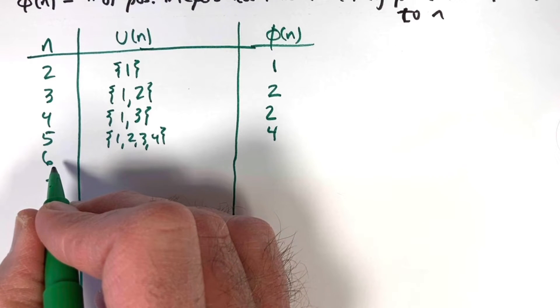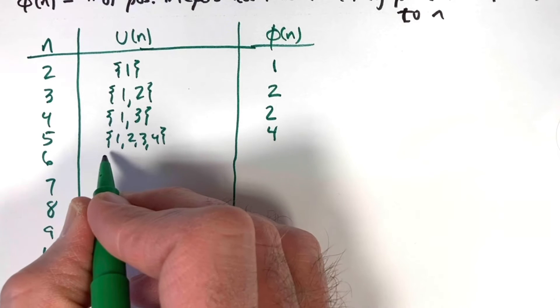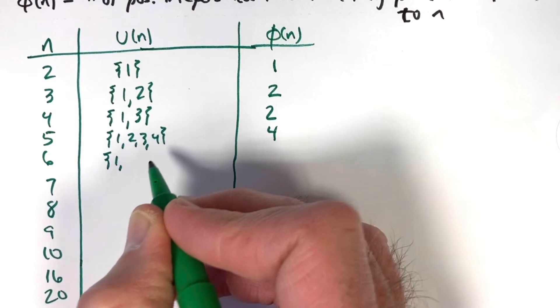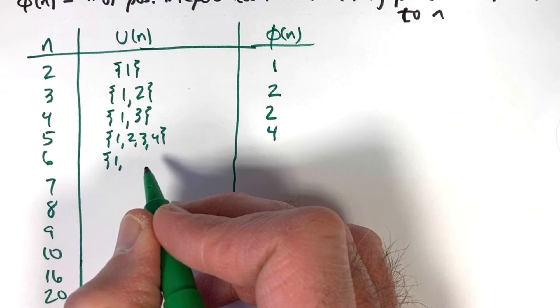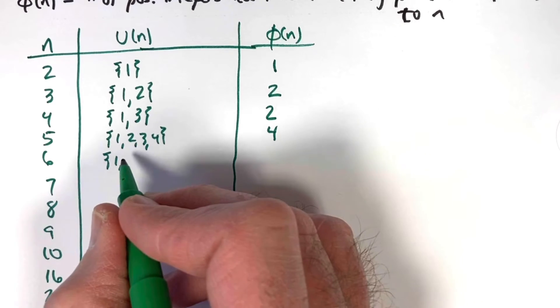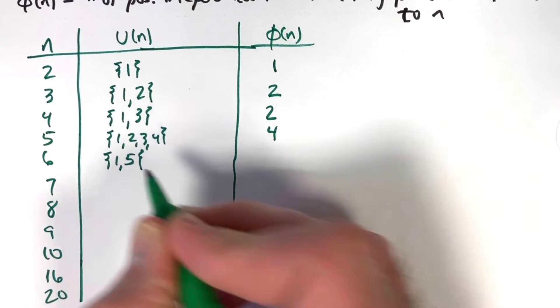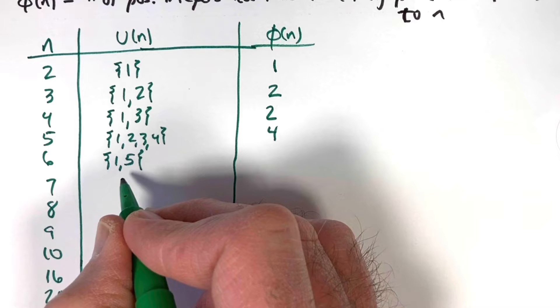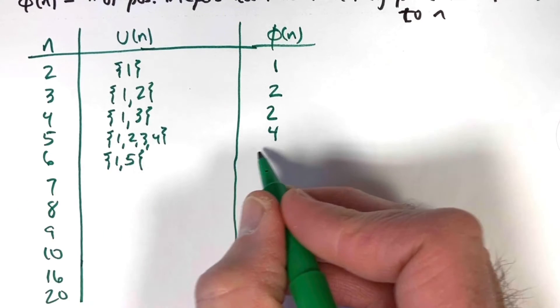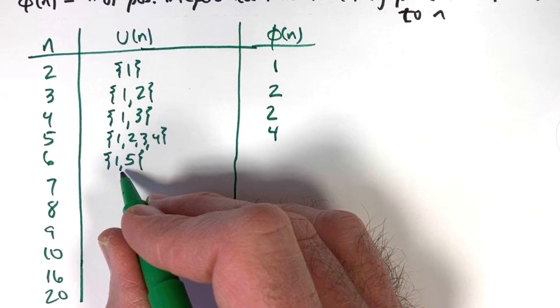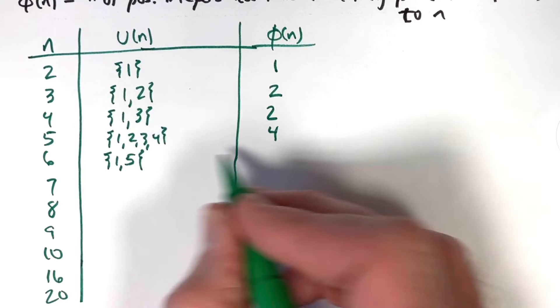6 is not prime. 6 = 2 × 3. What are the positive integers less than 6 that are relatively prime to 6? There are only two of them: 1 and 5. 2 is not, 3 is not, 4 is not. Therefore, φ(6) = 2.